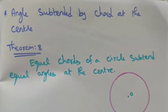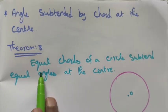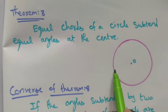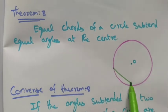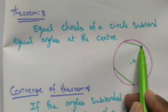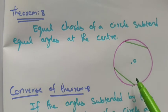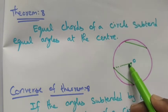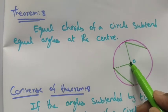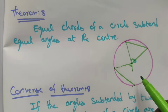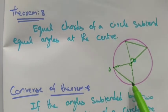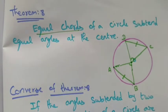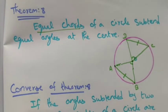Equal chords subtend equal angles at the center of the circle. Equal chords of a circle subtend equal angles at the center.